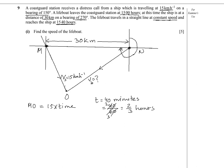If we simplify this fraction, in the simplest form it gives us 2 over 3 hours. Using this value, MO equals 15 times 2 over 3 km. 15 divided by 3 is 5, and 5 times 2 is 10, so MO equals 10 km. That means the ship travelled 10 km in 40 minutes.